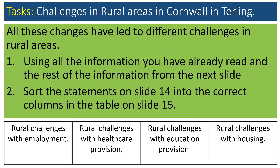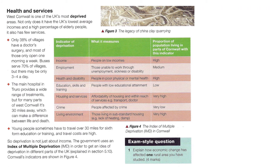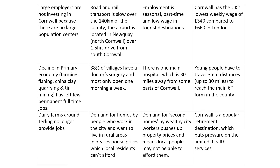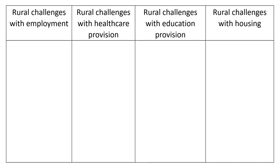All of these changes have led to different challenges in rural areas. On the next slide you'll see some statements, and I would like you to sort those statements into the correct columns in the table on slide 15. Decide whether each is a rural challenge with employment, healthcare provision, education provision, or housing. You can do this on paper, on the PowerPoint presentation, or in a Word document.